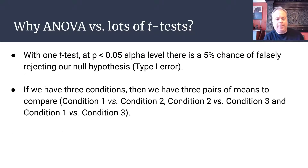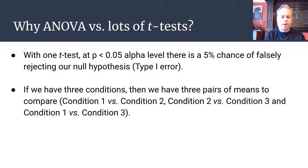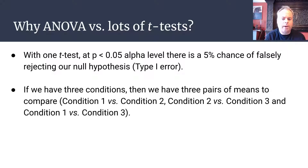With one t-test, when we adopt a critical alpha level of 0.05 — treating a comparison associated p-value of less than 0.05 as statistically significant — there's a 5% chance of us falsely rejecting our null hypothesis. This is a type 1 error: basically a 5% chance of us thinking we have an effect when we don't really have an effect.